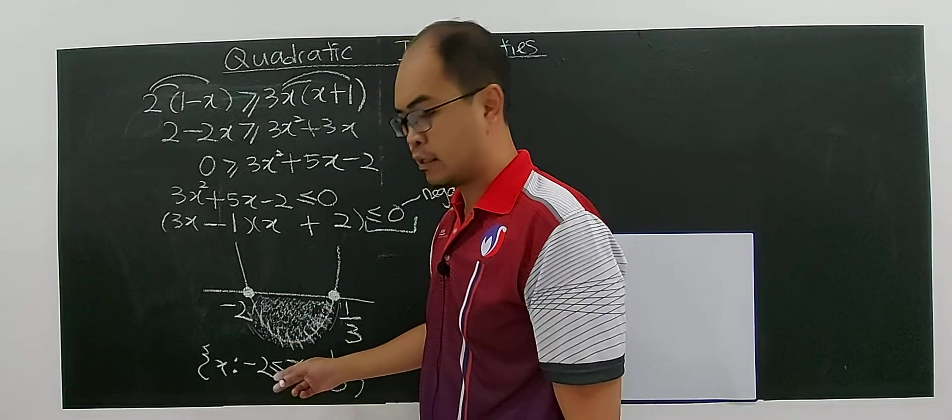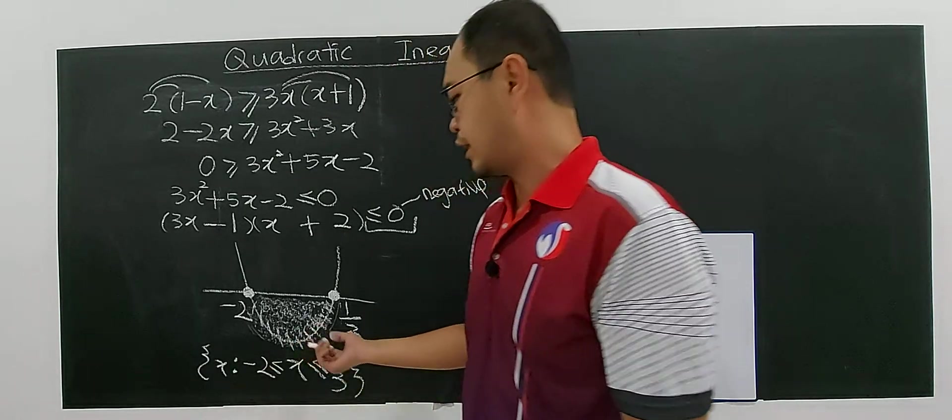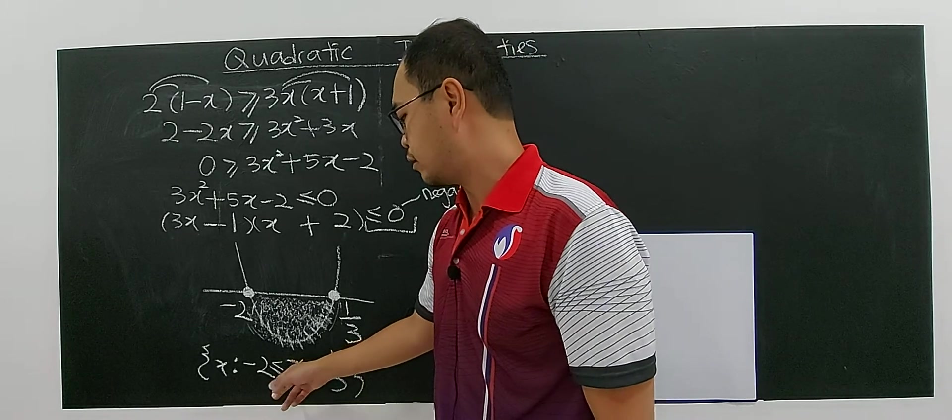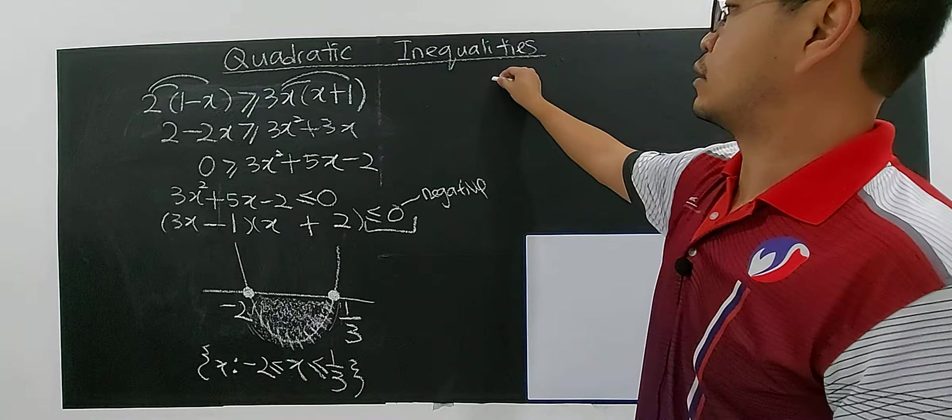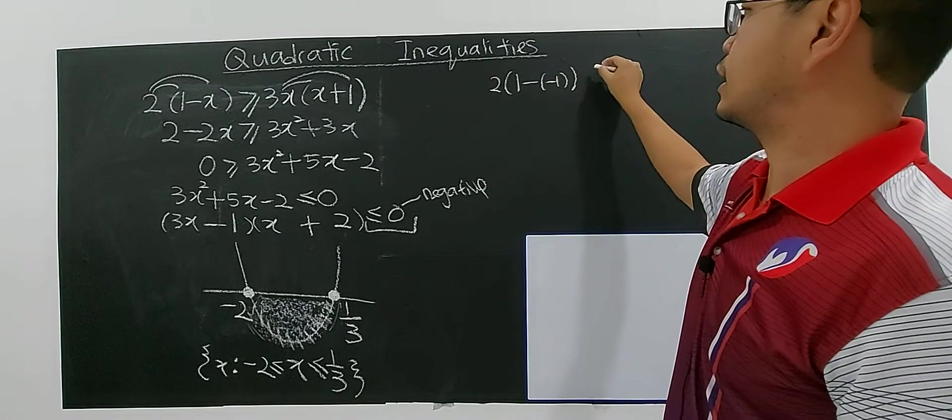You just don't just find it. Why this is your answer? Because you choose any value here. You can choose any value. You want to choose negative 1. If you want to choose negative 1, negative 1 is between these two numbers. So you can choose negative 1. If you put negative 1, I choose negative 1.